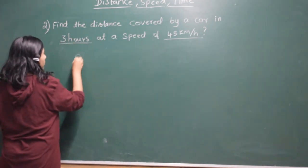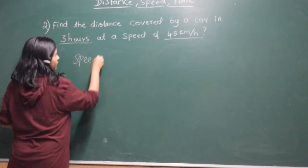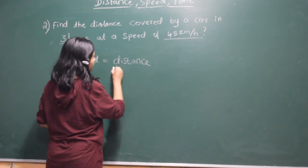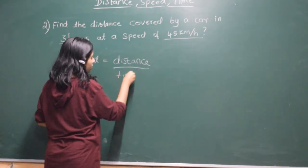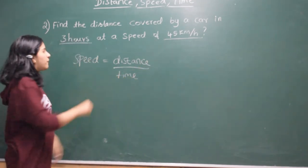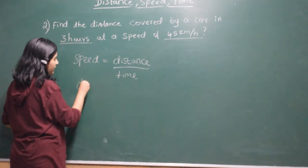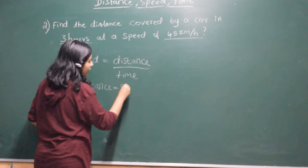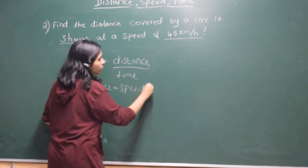So as we know, the formula of speed is equal to distance by time. So now we should find distance. So distance is equal to speed into time.